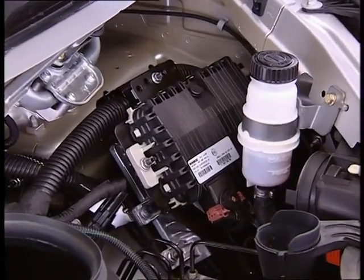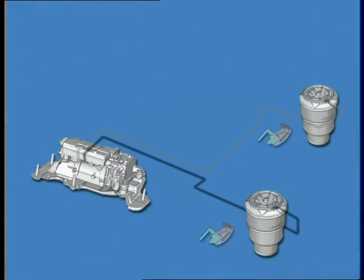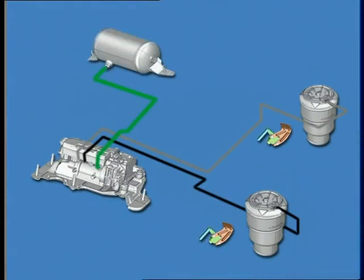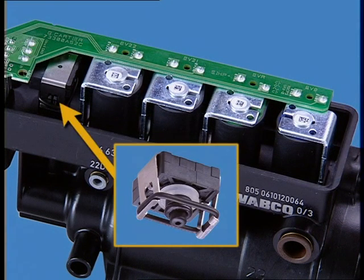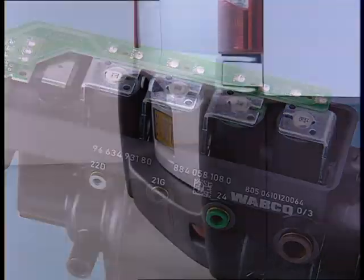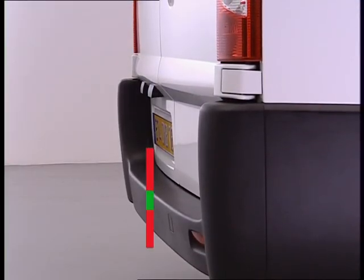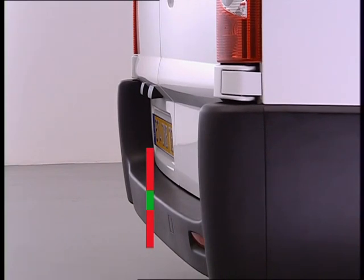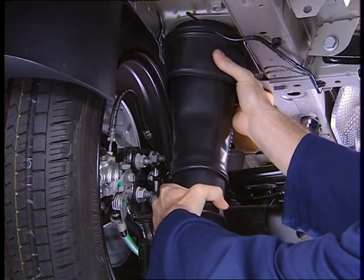In this program, we will first describe the air suspension system architecture. Then we will look in detail at the components specific to this system. Then we will explain how it operates and how it is used. And to finish, we will give a description of specific operations to be carried out.